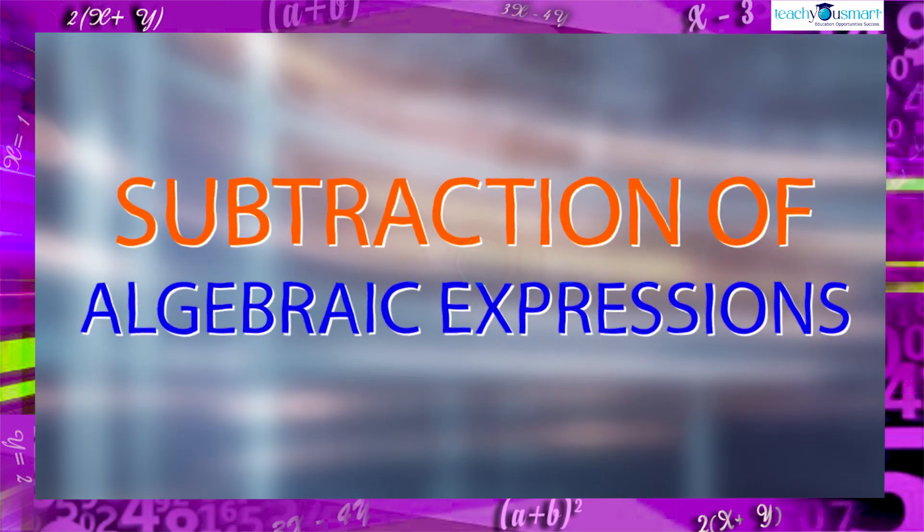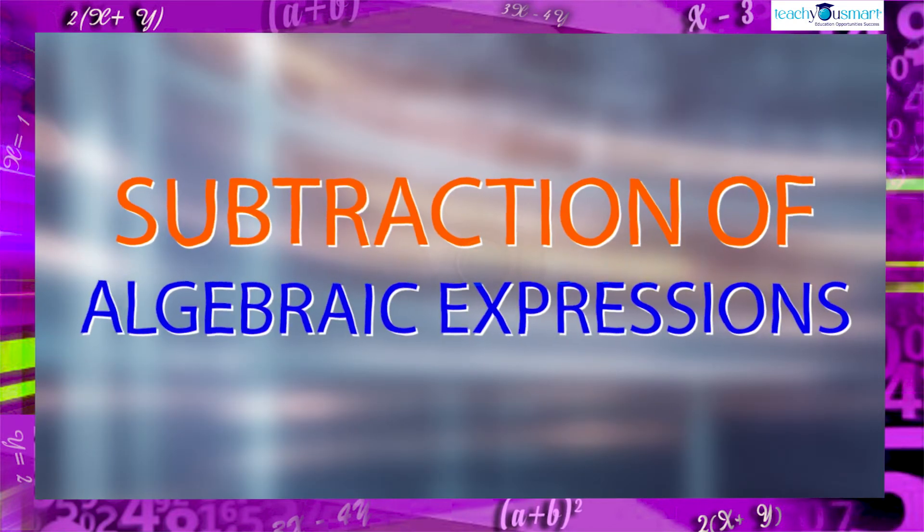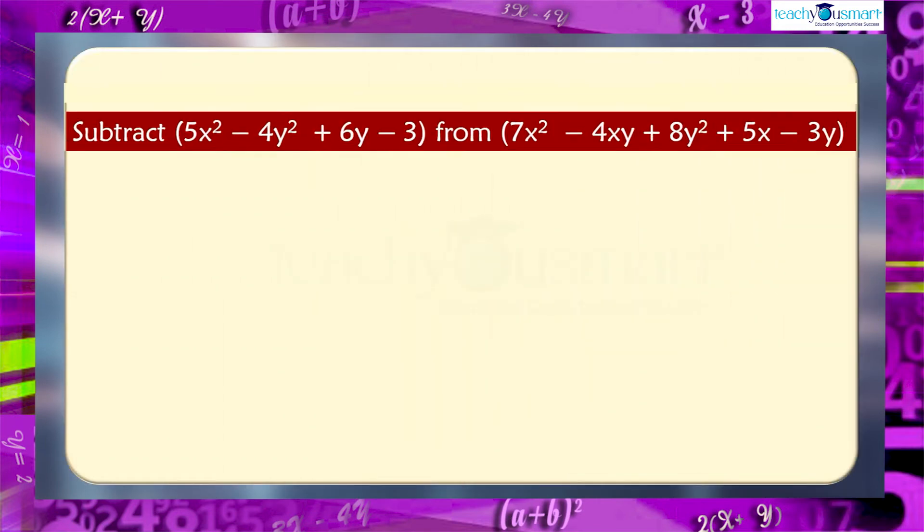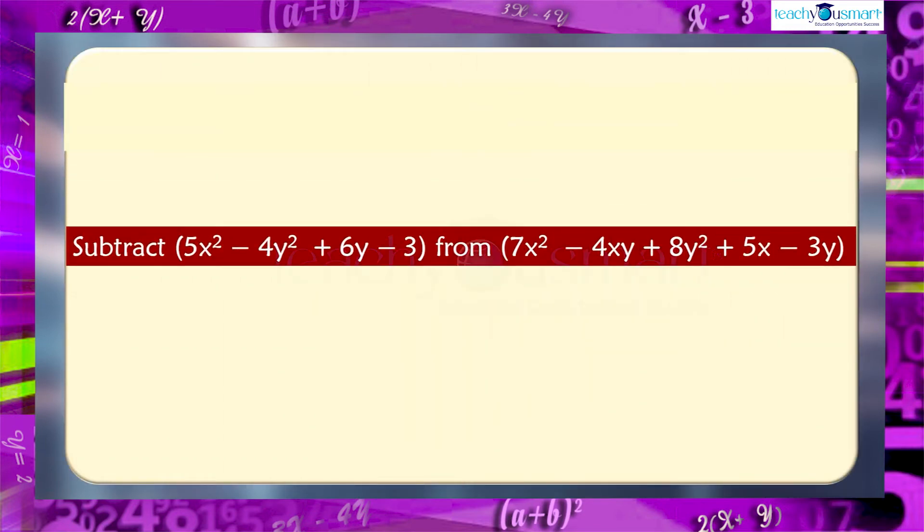Similarly, we can subtract the algebraic expressions. Subtract 5x square minus 4y square plus 6y minus 3 from 7x square minus 4xy plus 8y square plus 5x minus 3y. Here also write the algebraic expressions in separate rows with like terms, one below other.